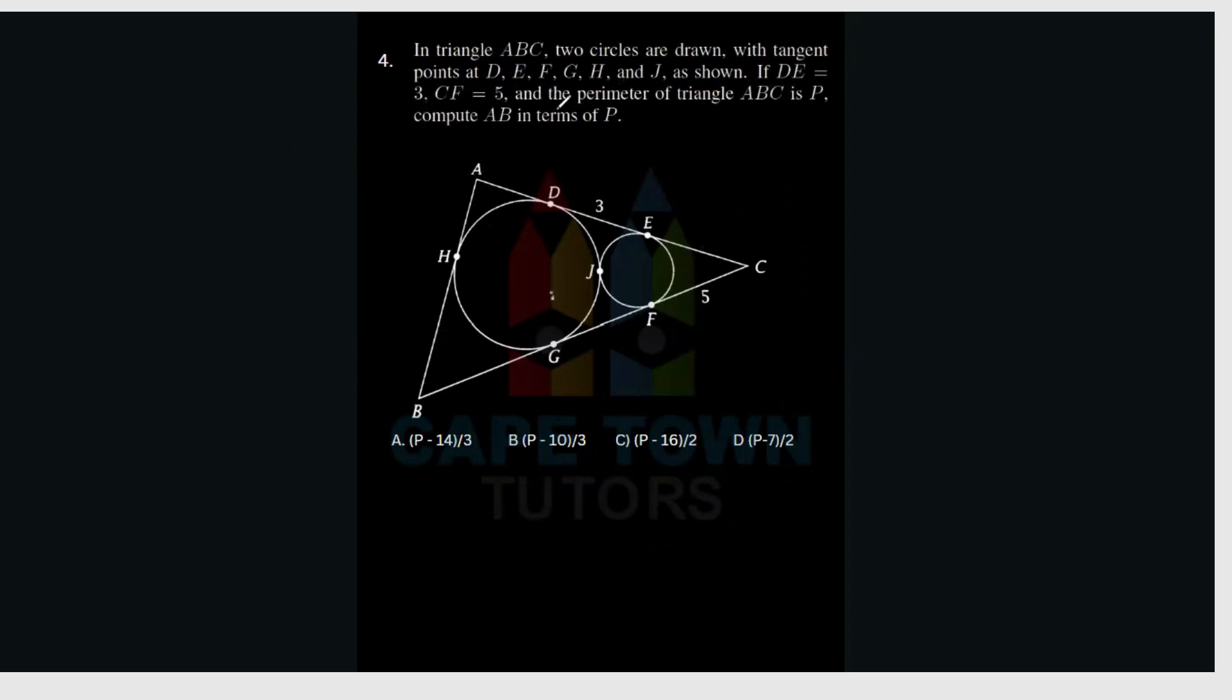So if DE is equal to 3, CF is equal to 5, and the perimeter of the triangle ABC is P, compute AB in terms of P. So we're looking for this side here, AB, in terms of P.